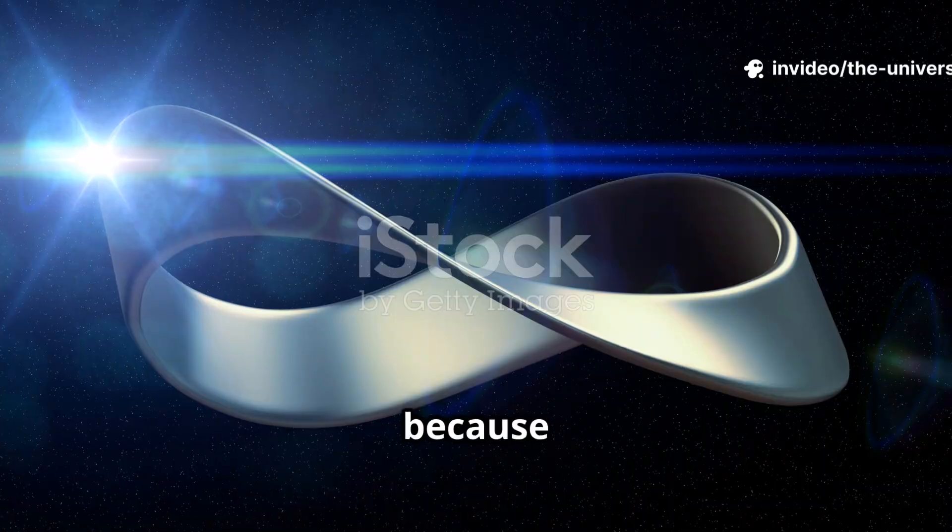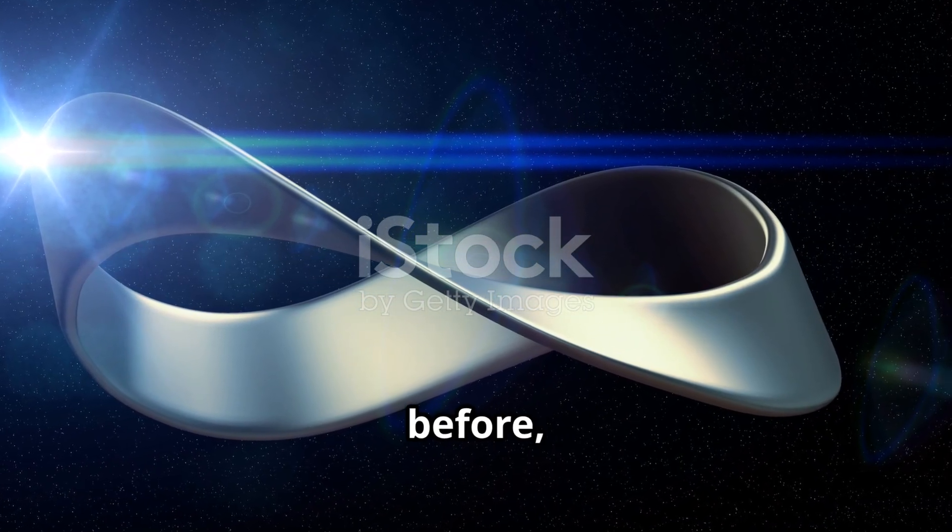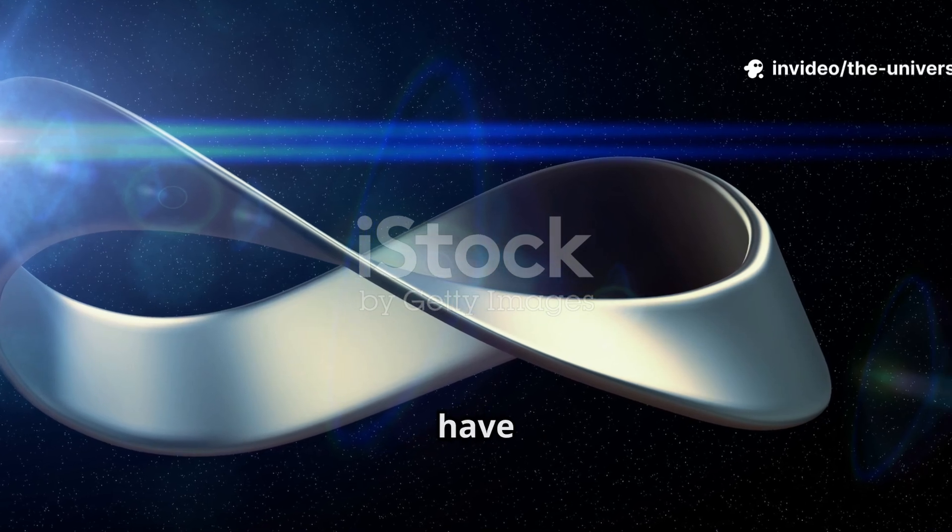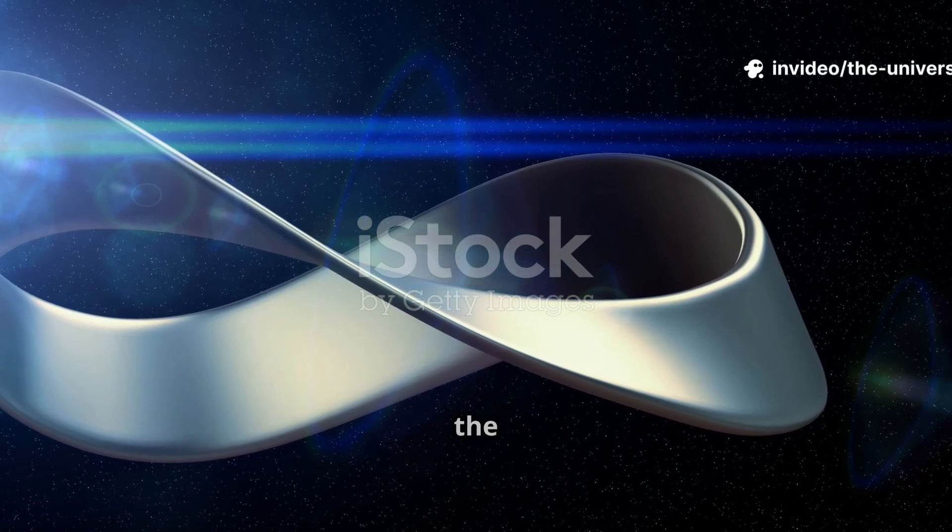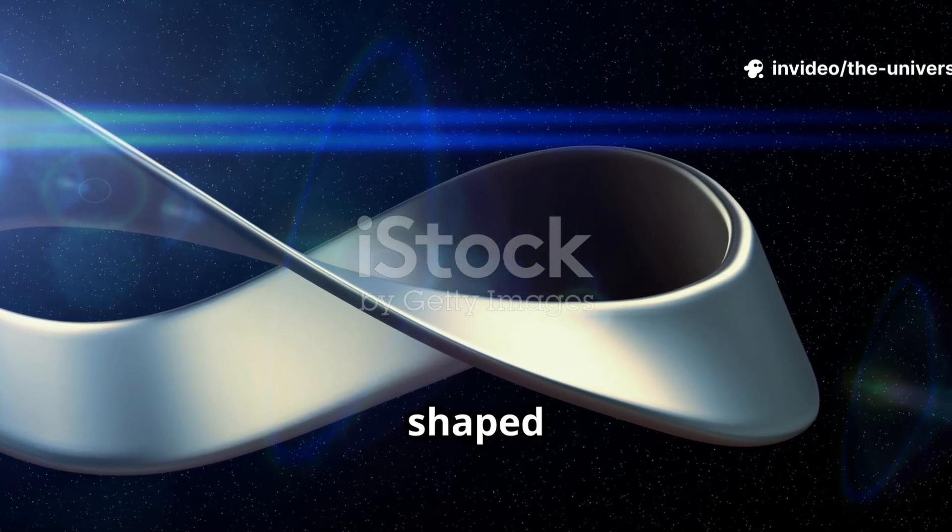We call it a torus because if you imagine re-rolling it back up, we first get the cylinder as before, and then we have to connect these two ends together. In practice if I try to do this I'd have to stretch out the material distorting the plane, but we can see that it should form something like a donut-shaped torus.